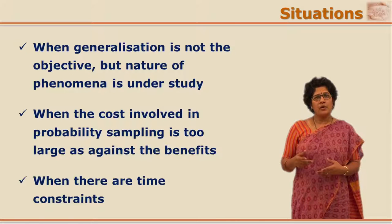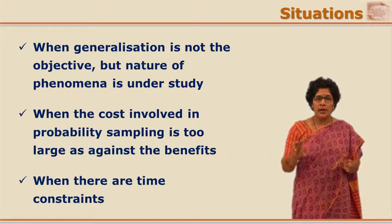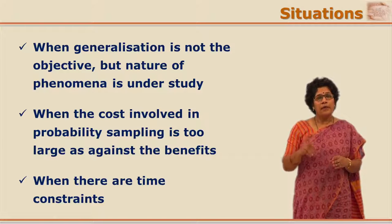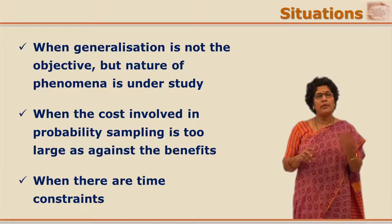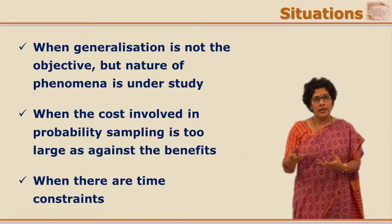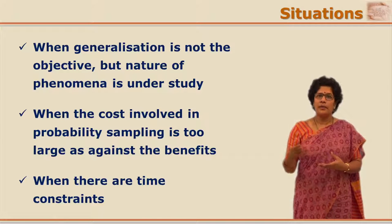In qualitative researches where generalization is certainly not the focus but the focus is on the process and on one's experience, randomization of the sample is not necessary. One goes for non-probability options where other factors come into picture, like the person who is directly related to that event or who has directly experienced a particular phenomenon — that person is considered as part of the sample.